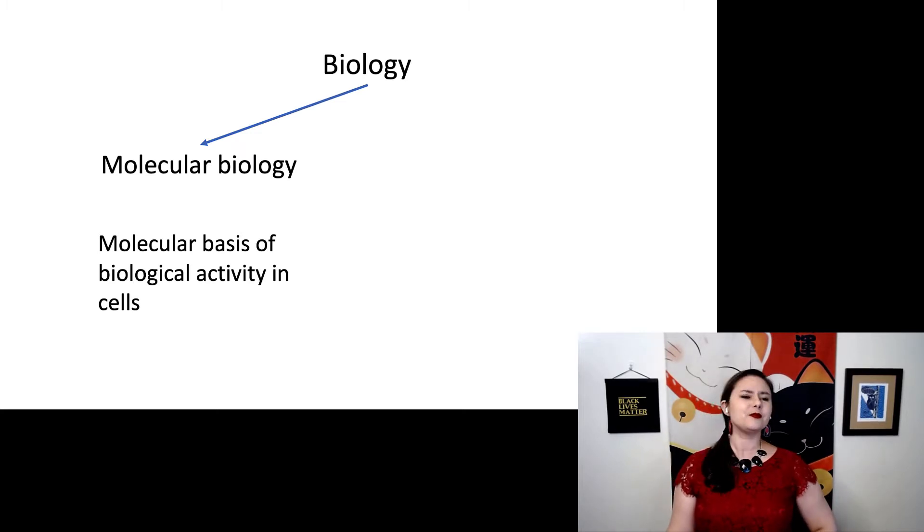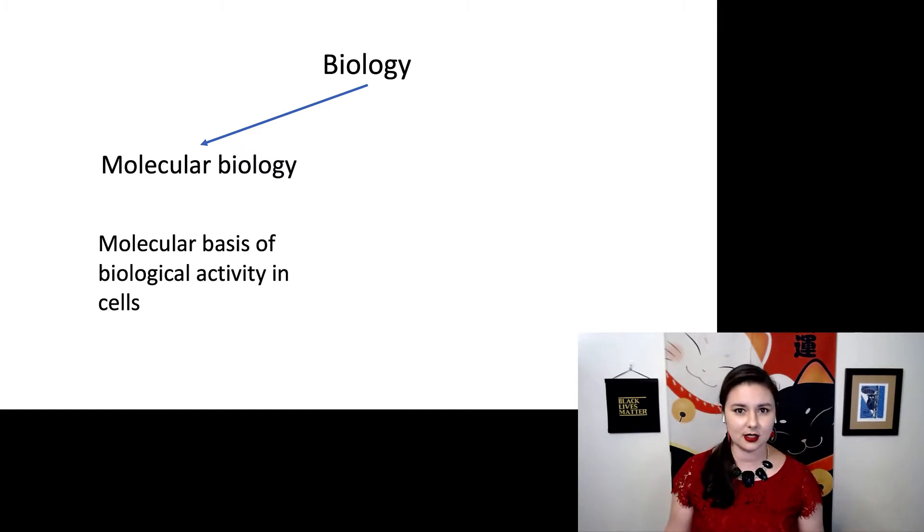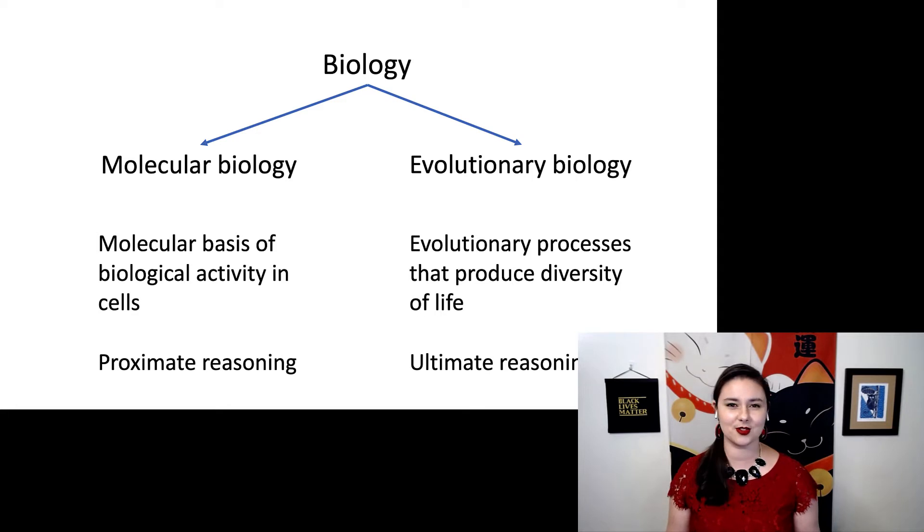But it can be hard sometimes to scale up these tiny reactions into bigger ideas. And that's where evolutionary biology comes in. So this is looking at the processes that produce the diversity of life that we see in the first place. So these are really looking at different scales for biology. In molecular biology, we'll frequently find proximate reasoning. And evolutionary biology uses something called ultimate reasoning. We'll get to those in a second.